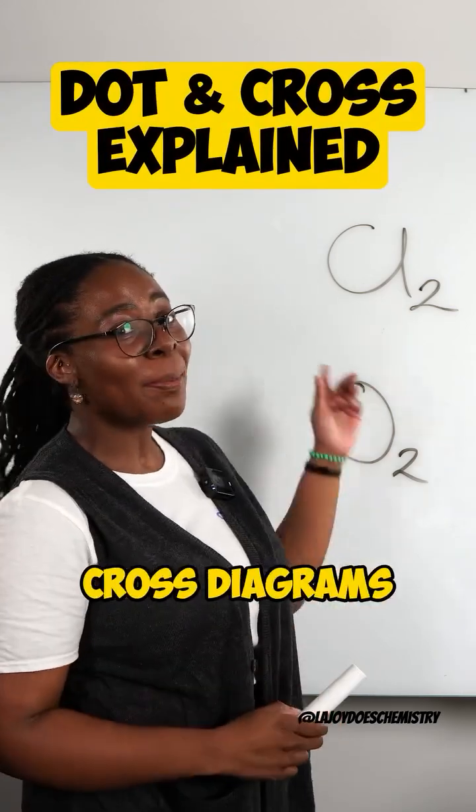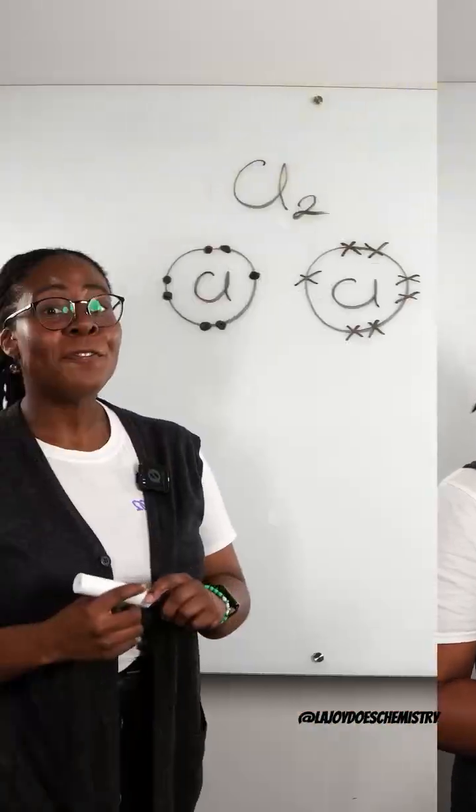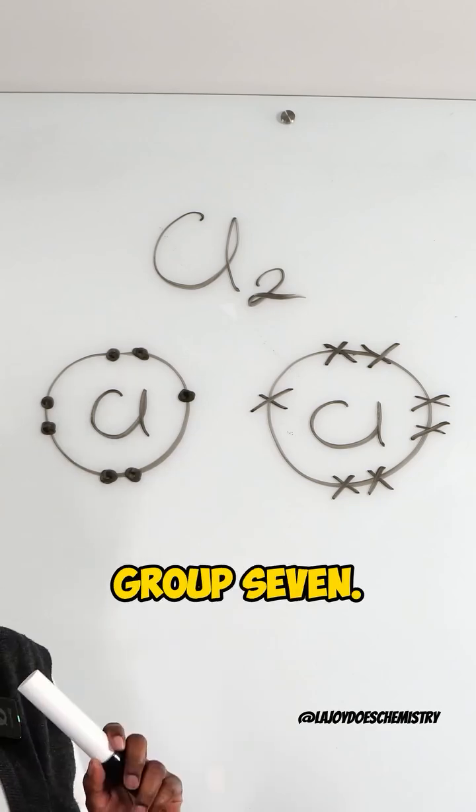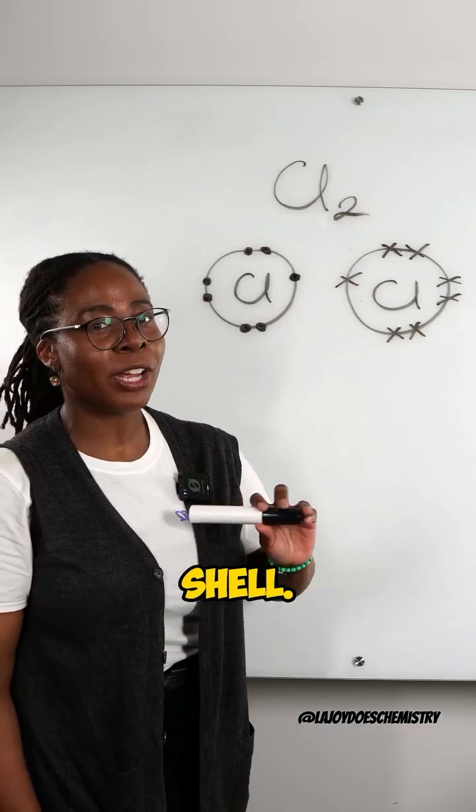Do you know how to draw the dot and cross diagrams for these two molecules? First we have chlorine in group 7, so it has seven electrons on its outer shell.